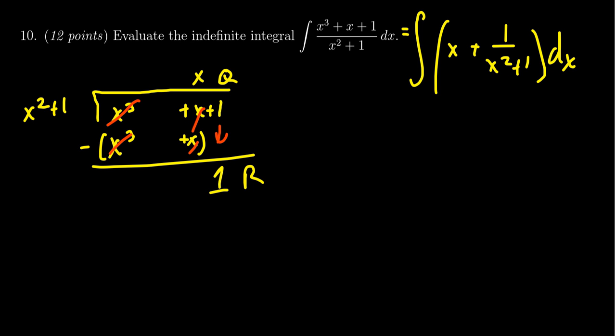we have to find an antiderivative of x. We have to find an antiderivative of 1 over x squared plus 1, for which the antiderivative of x is going to be x squared over 2.